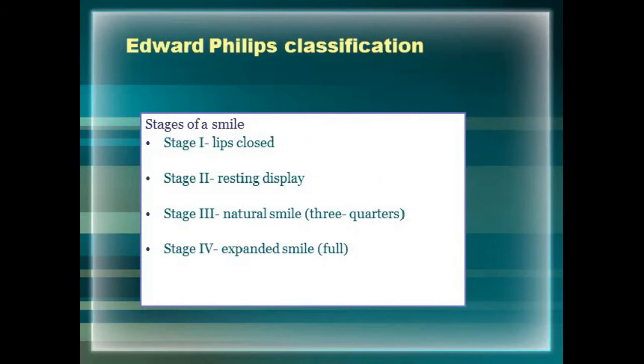Edward Phillips modified the Solomon classification and added one more part: stages of a smile. He divided into four stages — stage one with the lips closed, stage two the resting display, stage three the natural smile with three-quarters of the tooth structure visible, and stage four the expanded smile where the full tooth structure is visible during the smile.